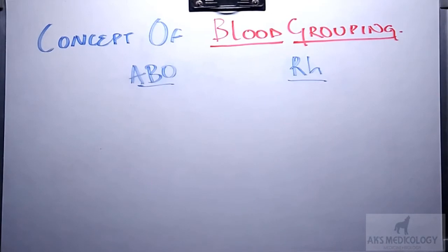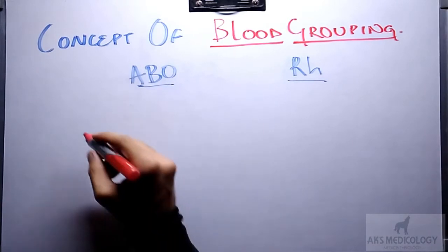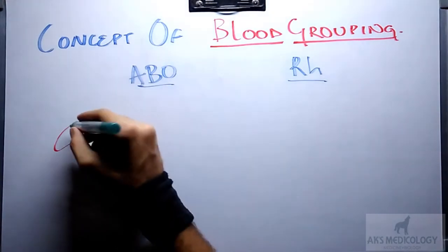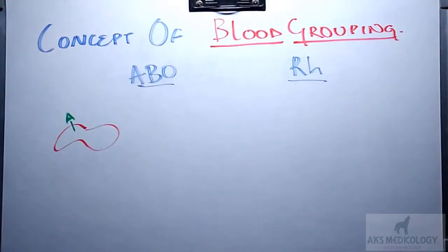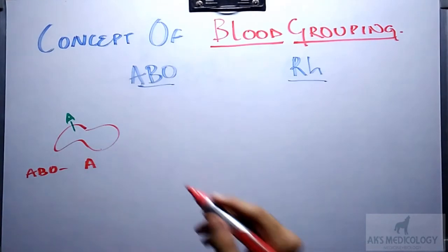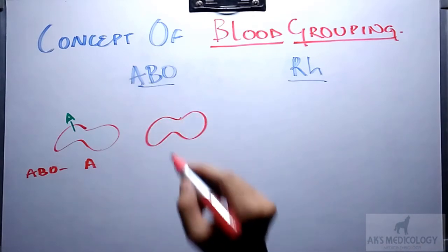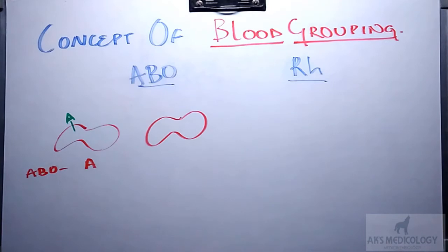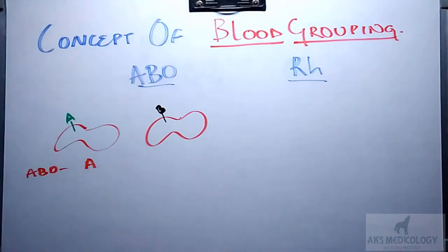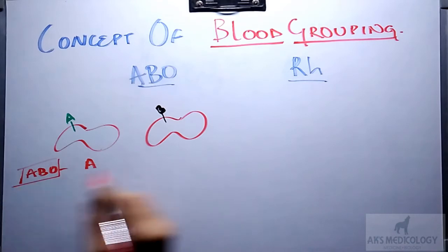The presence or absence of that specific antigen determines what the blood group of that individual would be. For instance, consider an RBC that possesses antigen A over its surface — the blood group of this individual according to the ABO system would be A. Similarly, an individual with antigen B on their RBC surface would have blood group B.